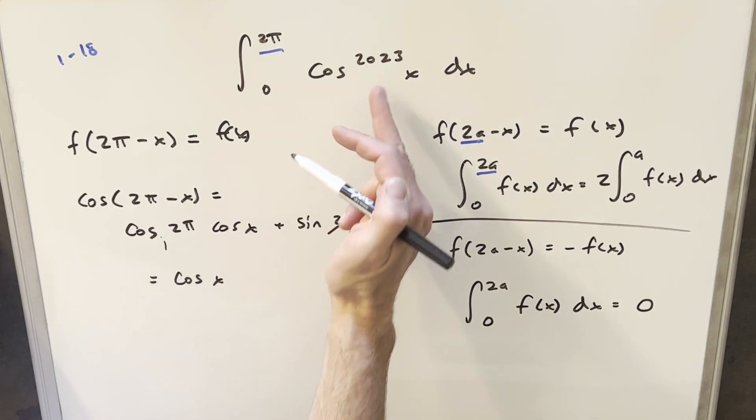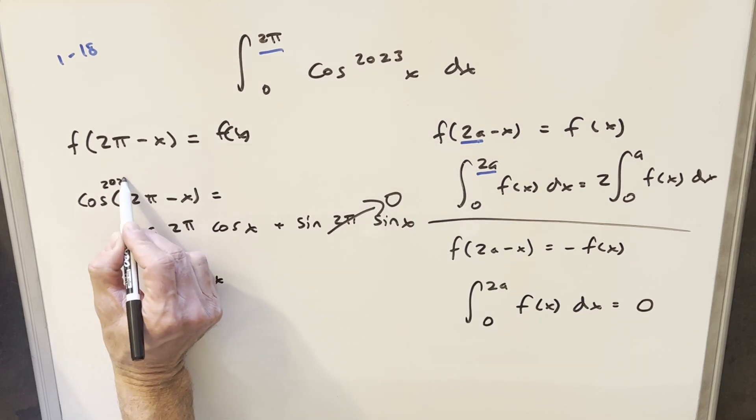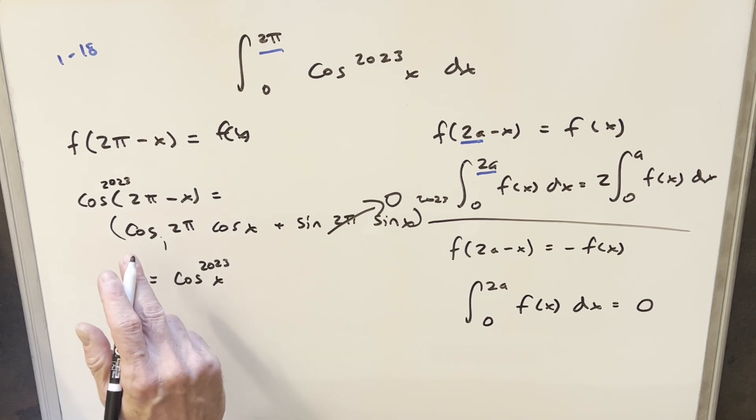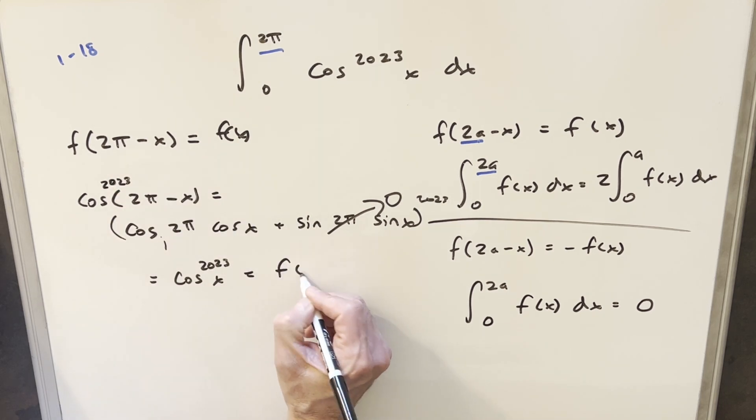Now, of course, our f of x is cosine of the 2023 x. I can just raise both sides of this to the 2023, and this is going to become 2023 x. So, this is going to be our f of 2a minus x is going to be the same thing as f of x. So, this condition here is true.